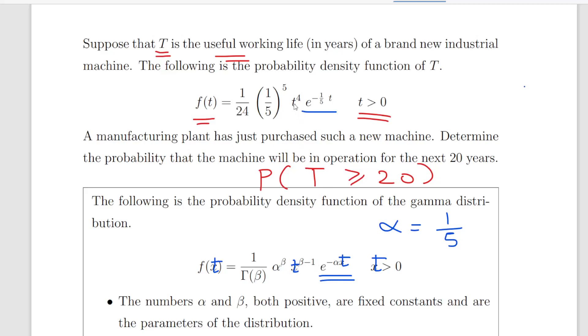t to the power of beta minus one. Well, here we have t to the power of 4, so necessarily that would suggest that beta equals 5. Here we have alpha to the power of beta, so (1/5)^5. That is consistent to what we have there before.